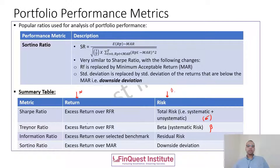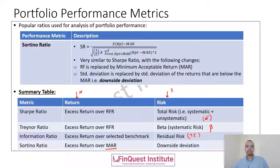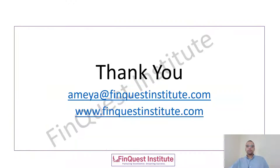The information ratio: numerator is excess return over a selected benchmark; denominator is the residual risk, also called tracking error (TE). The Sortino ratio: numerator is excess portfolio return over the minimum acceptable return defined by the investor; denominator is the downside deviation — the standard deviation of returns below the minimum acceptable return. This completes our review of Modern Portfolio Theory and CAPM.